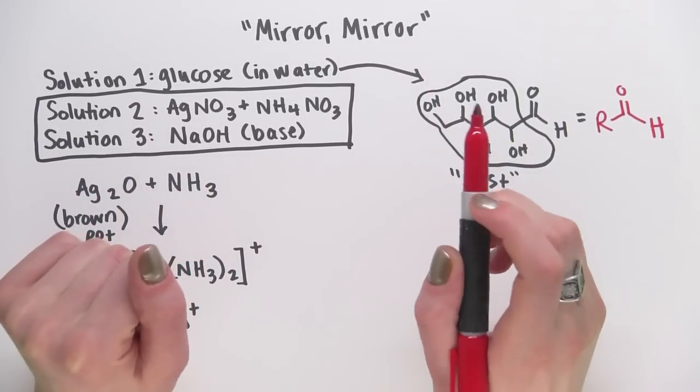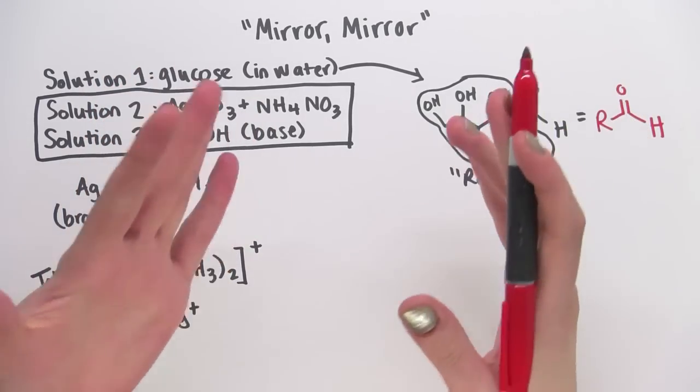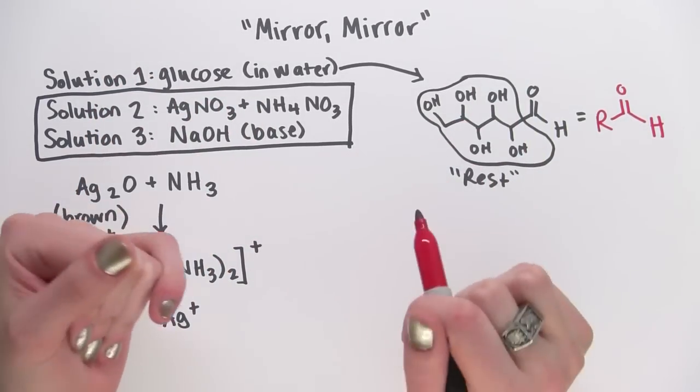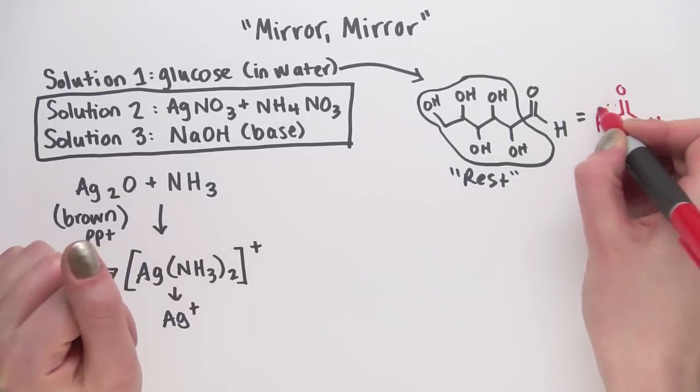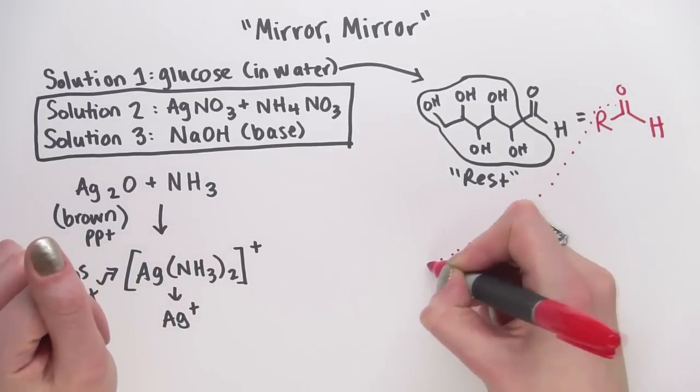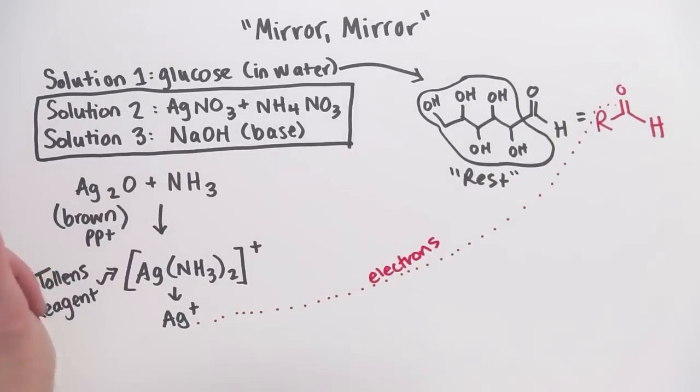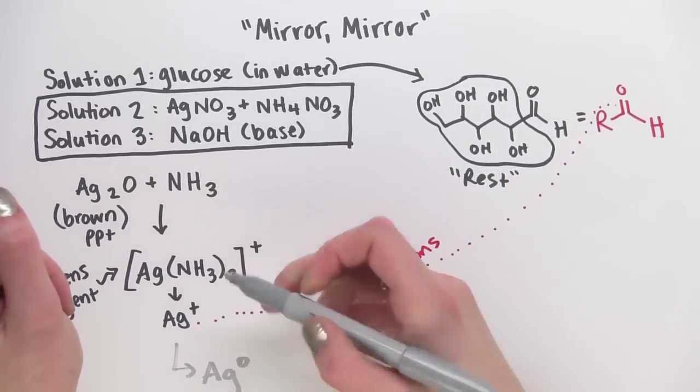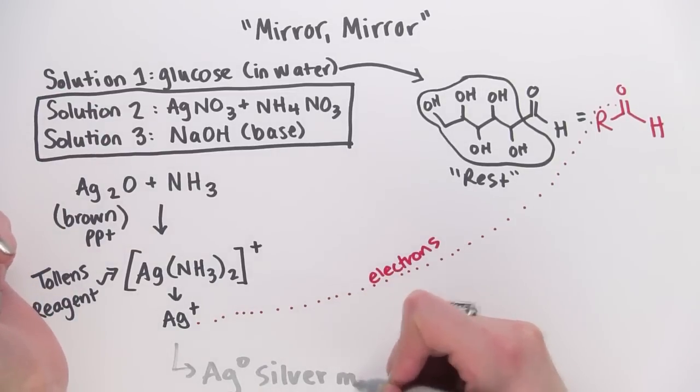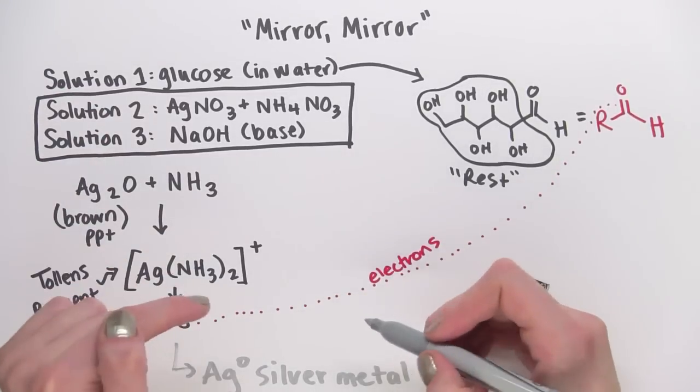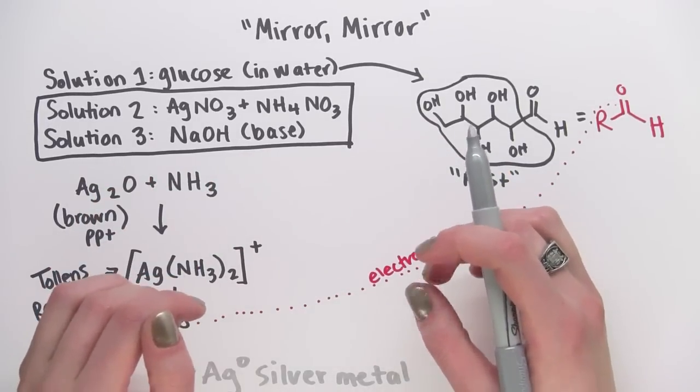Dr. Dolan has created a beautiful silver mirror. It almost looks like a Christmas tree ornament, and a silver ornament could, in fact, be made this way. So here's what's happening. Electrons from here, the glucose, get transferred to the silver, reducing it to silver zero. Silver zero is insoluble in water. It's just silver metal. And it's precipitating out on the inside of the flask, forming the beautiful silver mirror that we see.